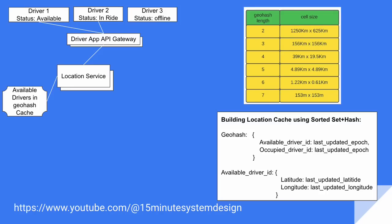Now let's talk about designing the system. Let's say there are three drivers. One driver is available and free, the second driver is in a ride, and the third driver is offline. All of these drivers are connected to the driver side app API gateway via their app client. We can omit the driver service for now, assuming driver side clients are able to pull driver profile info from the driver service and cache the data at device level. Driver side clients start pushing their locations and driver ID to the location service every five-second interval, and this keeps happening until the driver sets themselves as offline. The location service maintains all active drivers' locations at the geo hash level in cache.